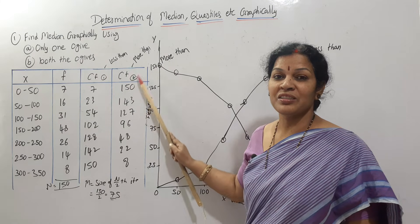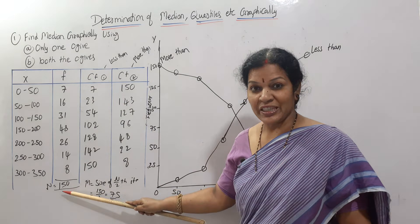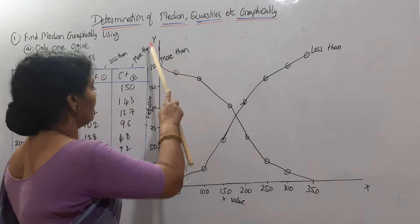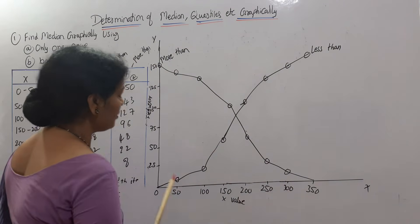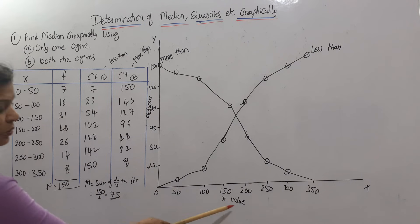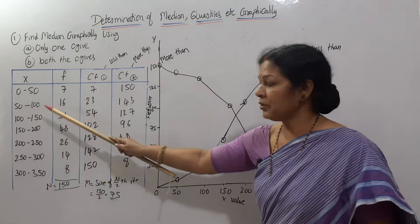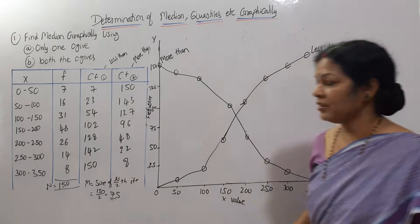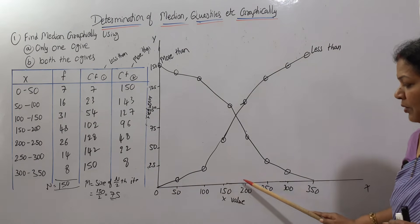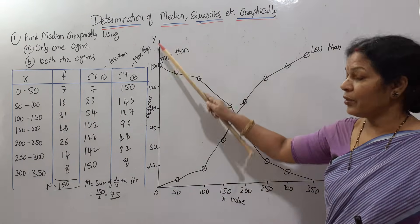Now we prepare the graph. I've drawn both x-axis and y-axis. On the x-axis, I take the x-values: 0 to 50, 50 to 100, and so on up to 350. I've set 1 centimeter equal to 50 units, so the scale reads 50, 100, 150, 200, 250, 300, 350 — covering the maximum value. That completes the x-axis.